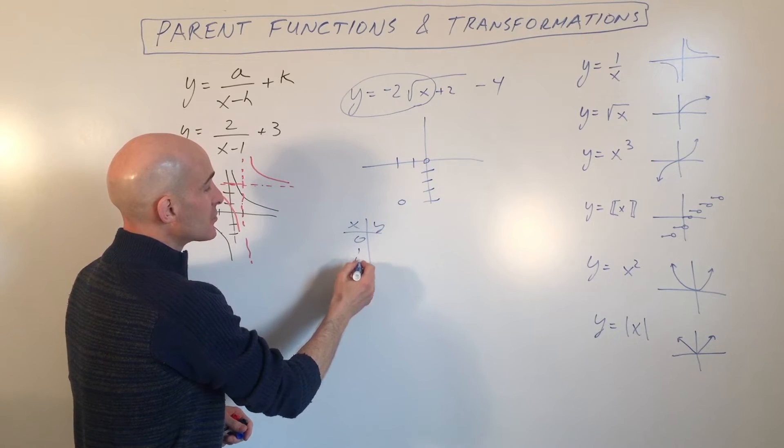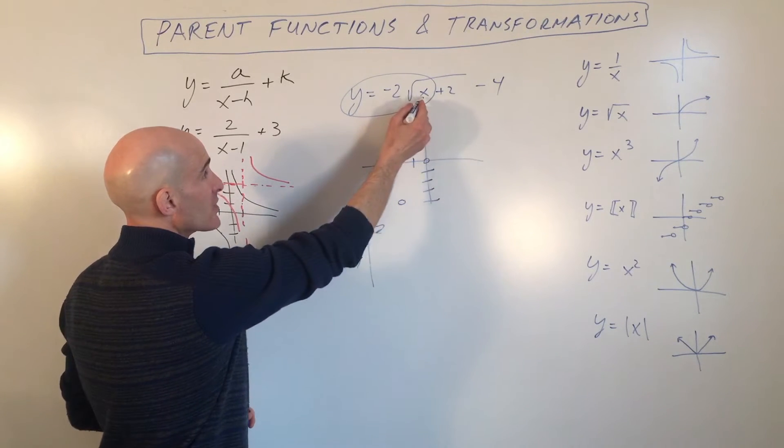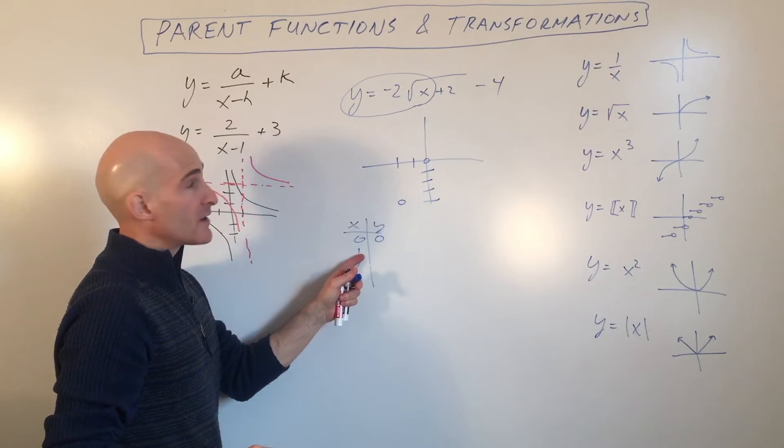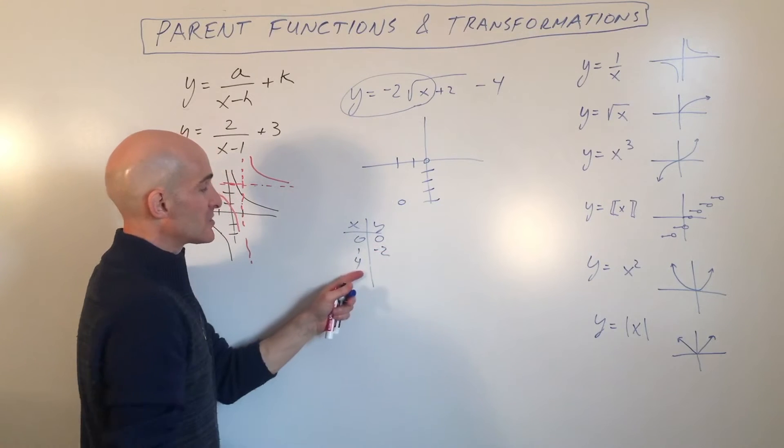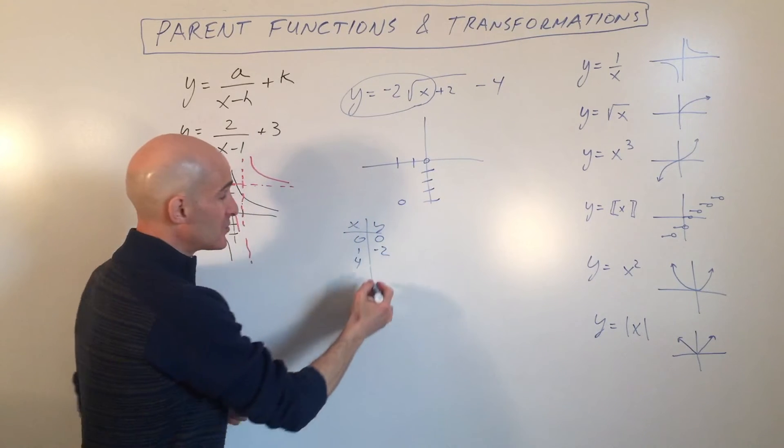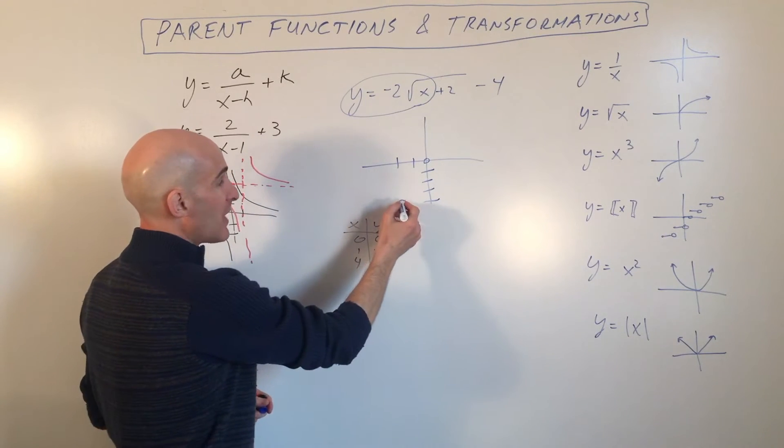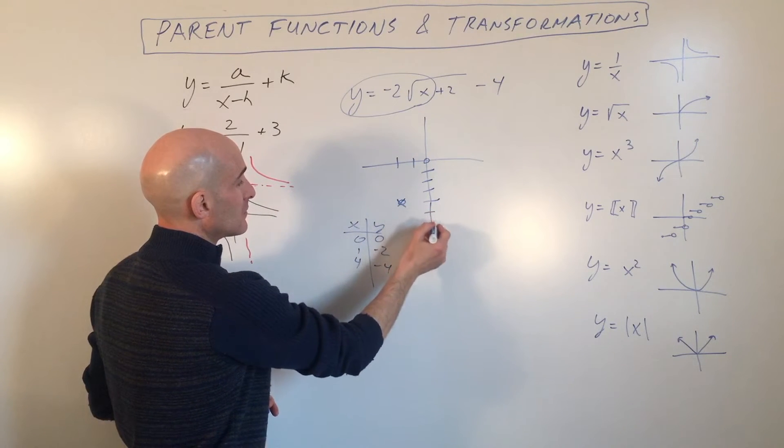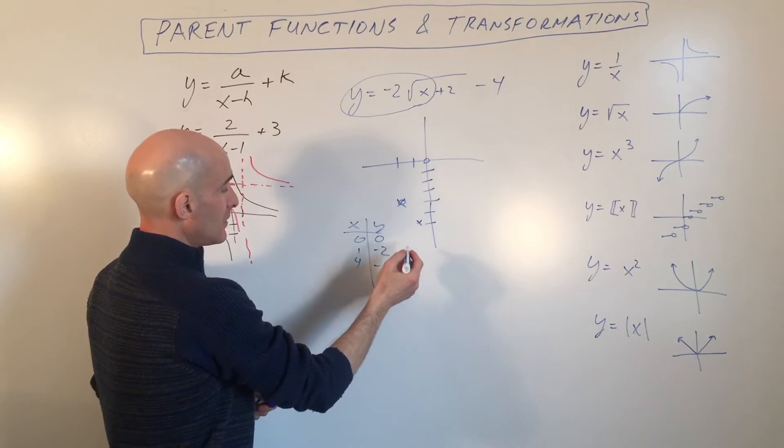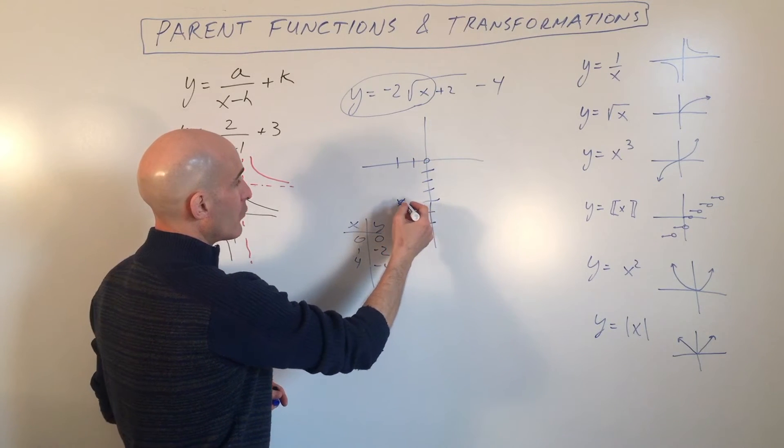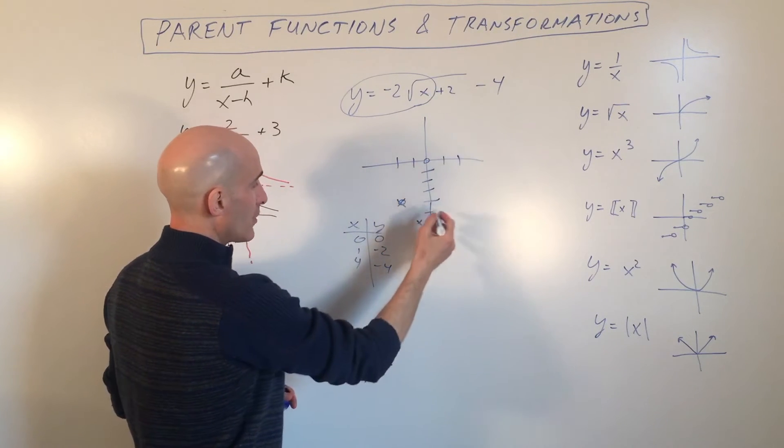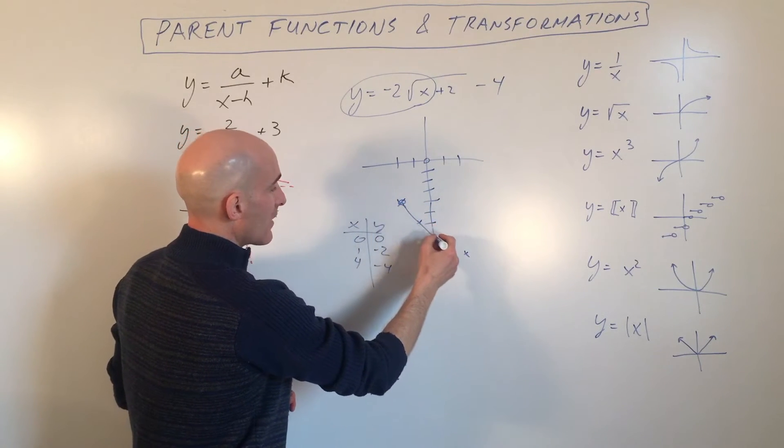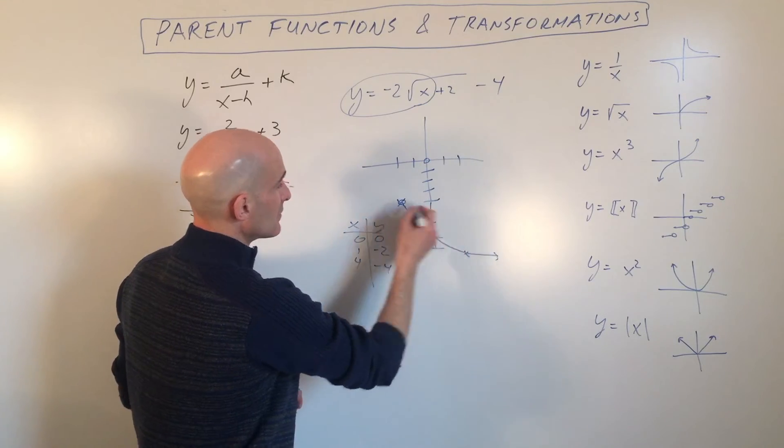Pick some easy values like 0, 1, and 4. Square root of 0 is 0, times negative 2 is 0. Square root of 1 is 1, times negative 2 is negative 2. Square root of 4 is 2, times negative 2 is negative 4. And we're going to plot these points from here. So right 1, down 2. Right 4, 1, 2, 3, 4, down 4, right there. And you can see the graph looks like that.